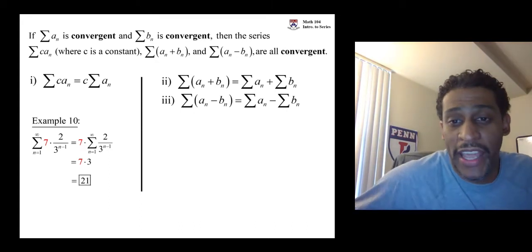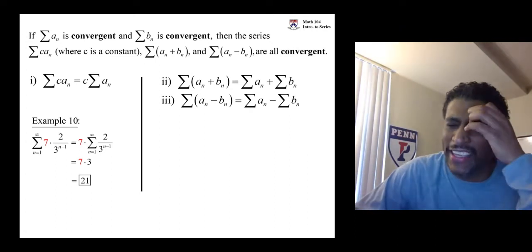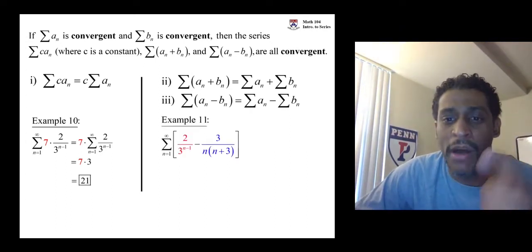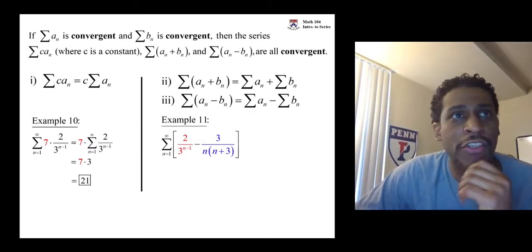Here's an example of adding two convergent series together. Let's take the geometric series that we have here and one of the telescoping series that we did. I forget which example it was. It was the one with the partial fraction decomposition.